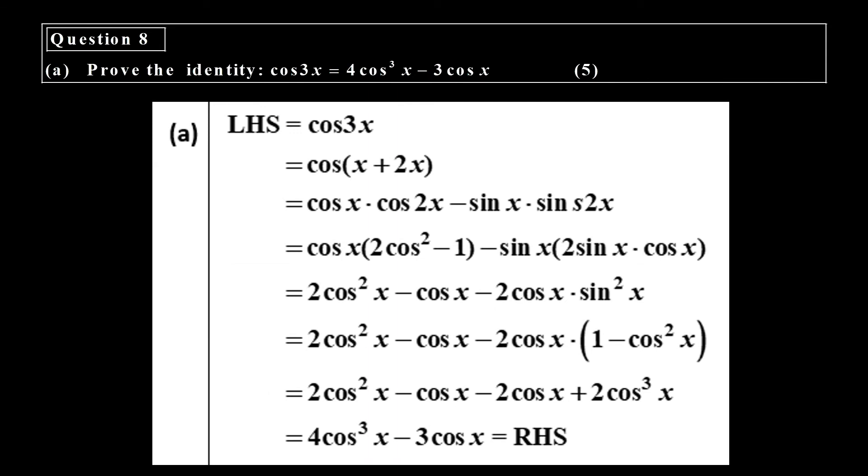Question number 8a. Again, this is a standard one. Cos of 3x, we can split this x plus 2x. Then we expand it. There's a cos 2x. I use identity. There's a sin 2x. That s doesn't belong there. I get an identity there. And then I can remove the brackets.